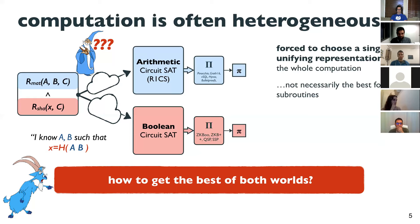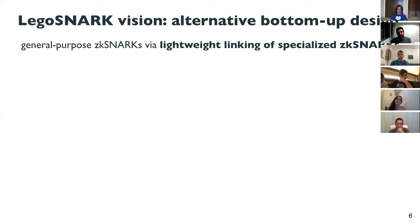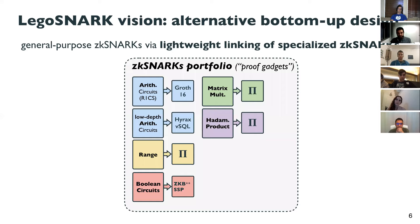The Lego SNARKs project envisions an alternative bottom-up design paradigm for general-purpose SNARKs, achieved by lightweight linking of specialized ZK-SNARKs. The basic idea: assume you have a pool of ZK-SNARKs — proof gadgets — that instead of being all general purpose, could be specialized. Some handle general arithmetic circuit satisfiability, while others deal only with range proofs, inner products, matrix multiplications, and so on.